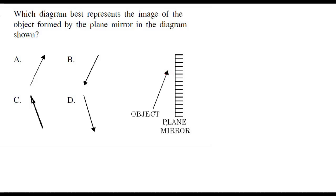To solve these kinds of problems, consider two objects in the plane mirror — one representing the head which is near, and the tail which is quite far away. We know that the image is formed at the same distance behind the mirror. So if this is the object, then this would be the image, making A the correct answer.